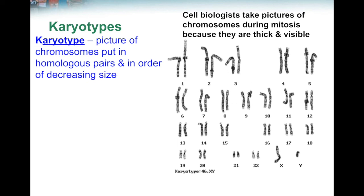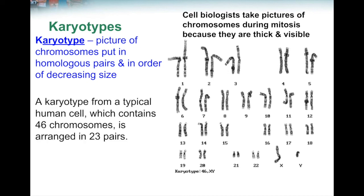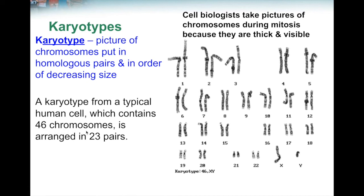The chromosomes are also in size order, going from the largest all the way to the smallest, except for the last pair, which doesn't have numbers but does have letters. A scientist or doctor can look at this karyotype and tell if a person has a genetic disorder — maybe they have too many chromosomes or not enough. Remember, you have to have 46 chromosomes, and sometimes something goes wrong and a person might be born with too many or not enough.